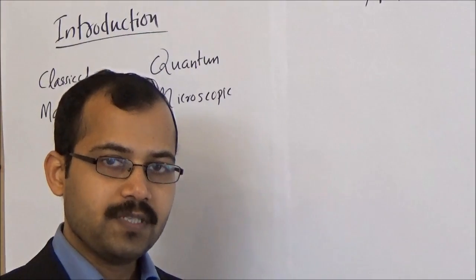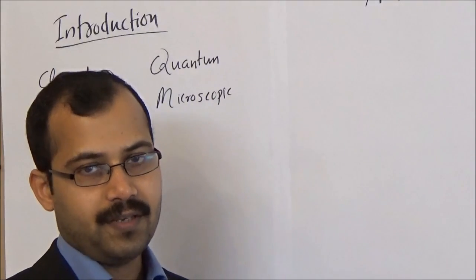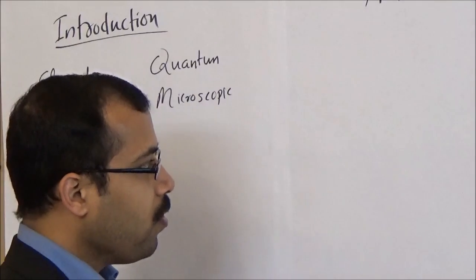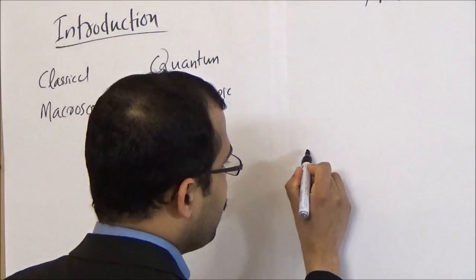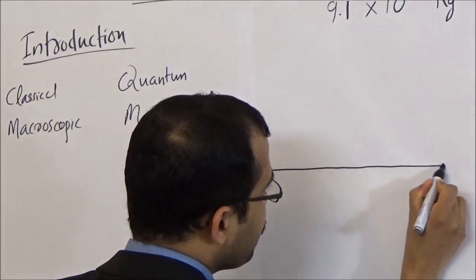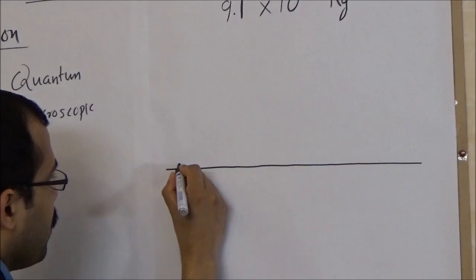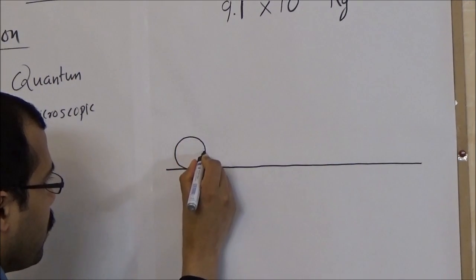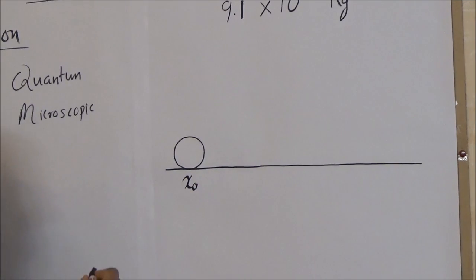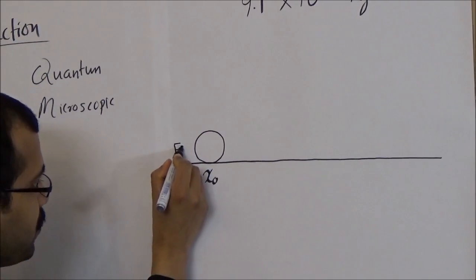Now let's go more specific about the differences between classical mechanics and quantum mechanics. To understand this difference, let's consider a ball over a horizontal surface. This is a horizontal surface. And here is a ball at the position x0.